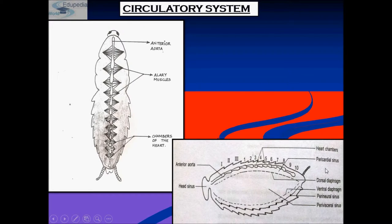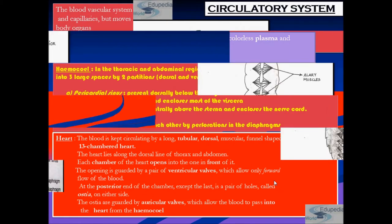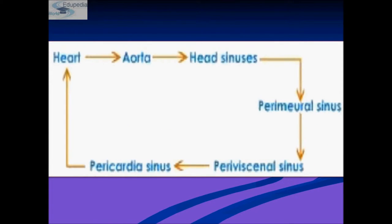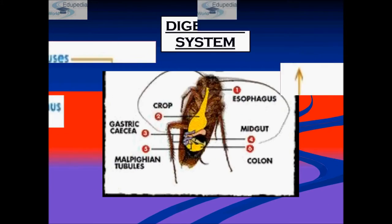There are three types of sinuses: pericardial sinus, perineural sinus, and perivisceral sinus. Ostia are guarded by auricular walls which allow blood to pass into the heart from the hemocoel. Blood flows from the heart to the aorta, then to head sinuses, then to perineural sinus, perivisceral sinus, pericardial sinus, and back to the heart.